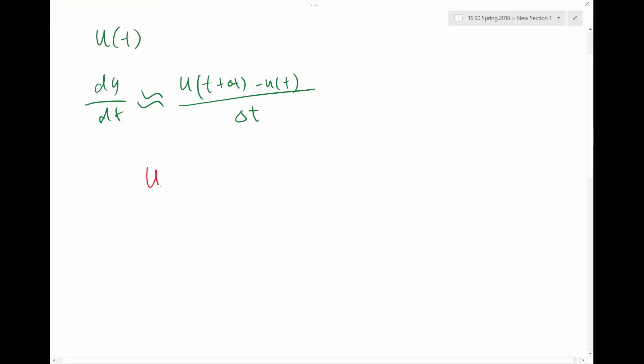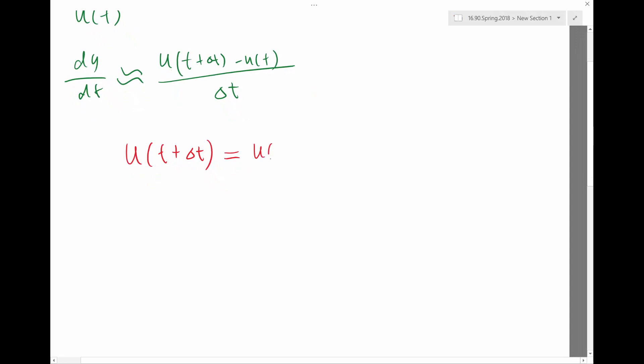The Taylor series expansion is saying that u of t plus delta t can be expanded into u of t plus delta t times du/dt plus delta t squared over 2 times d squared u/dt squared plus delta t cubed over 3 factorial times d cubed u/dt cubed plus delta t to the 4th over 4 factorial. You can see the pattern, right? So have you all seen this before? Taylor series analysis.